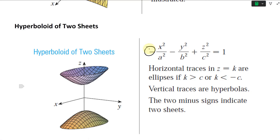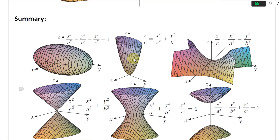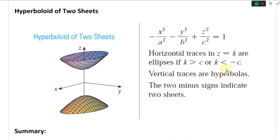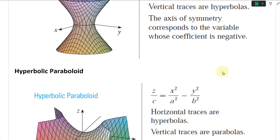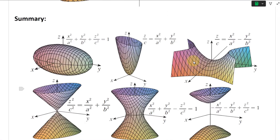In summary, here are all six types of quadric surfaces: ellipsoid, elliptic paraboloid, hyperbolic paraboloid, cone, hyperboloid of one sheet, and hyperboloid of two sheets.